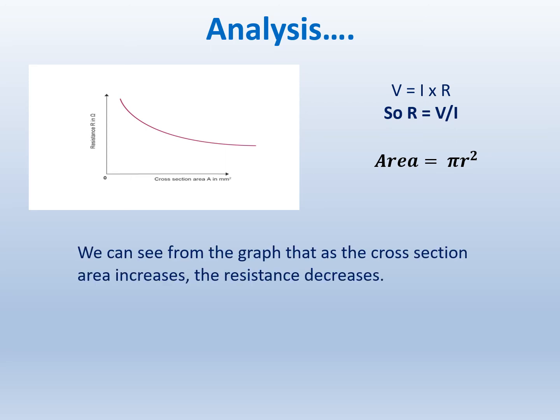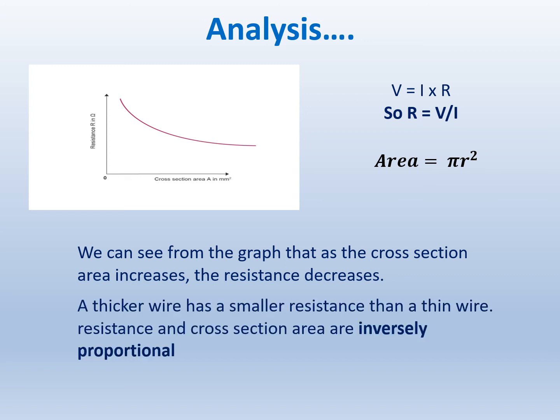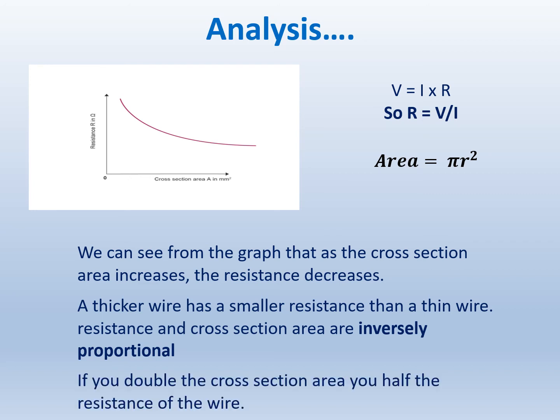You can see from the graph that as the cross-sectional area increases, the resistance decreases. A thicker wire has a smaller resistance than a thin wire. Resistance and cross-sectional area are inversely proportional — if you double the cross-sectional area, you halve the resistance of the wire.